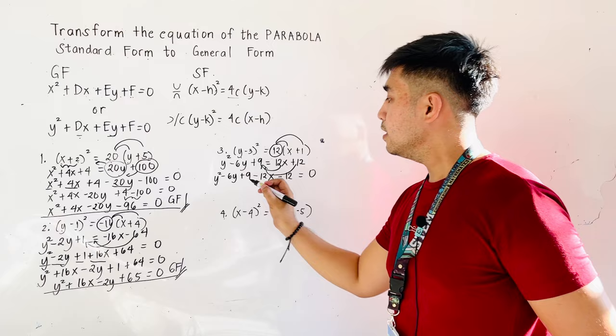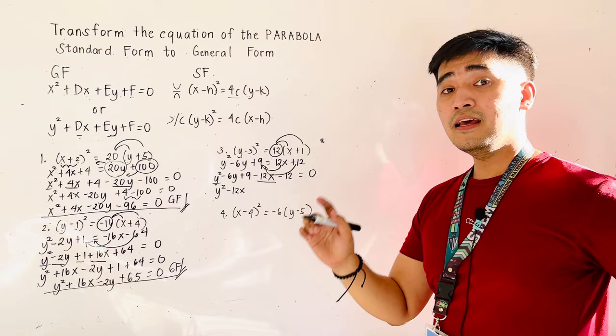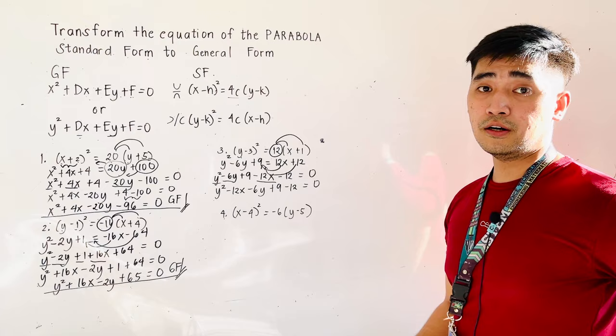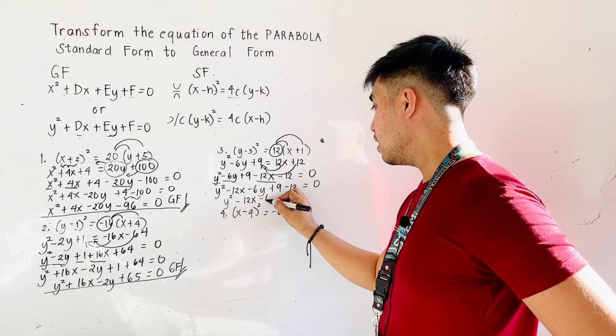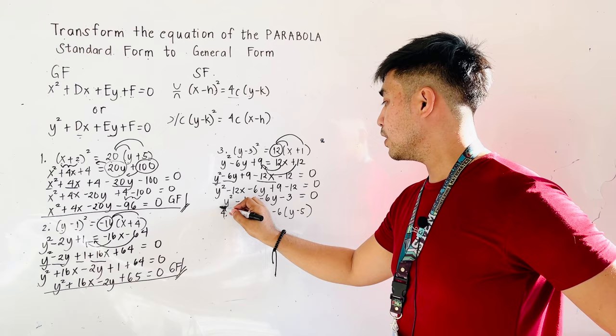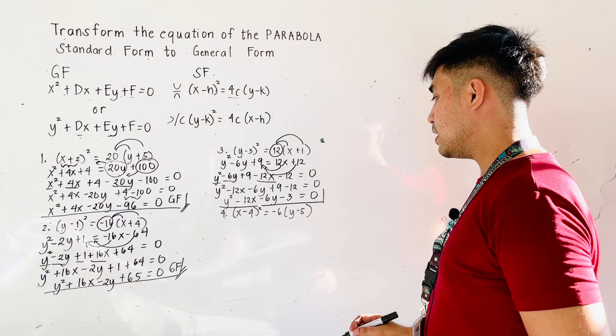Since we have y squared, what comes after y squared? y squared plus dx — therefore the x variable, which is negative 12x. And then after the x variable, the y variable, that is minus 6y. And then all the constants, which is plus 9 minus 12 is equal to 0. Simplifying this further, we'll now be having y squared minus 12x minus 6y, and plus 9 minus 12 is negative 3, is equal to 0. Therefore, the general form is y squared minus 12x minus 6y minus 3 is equal to 0.